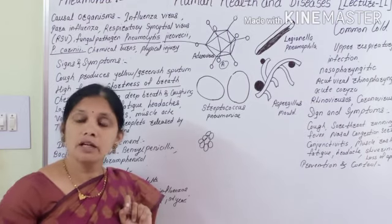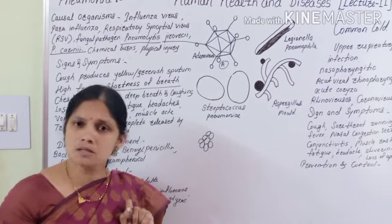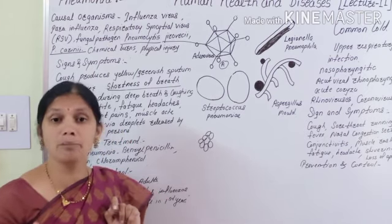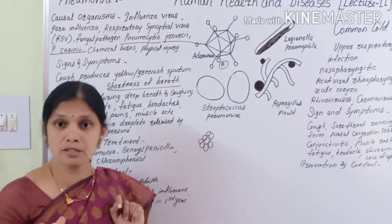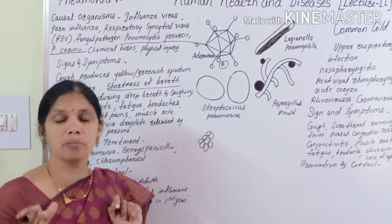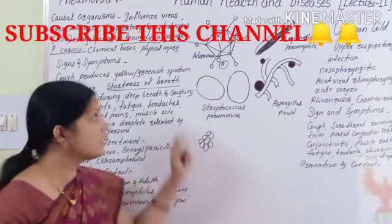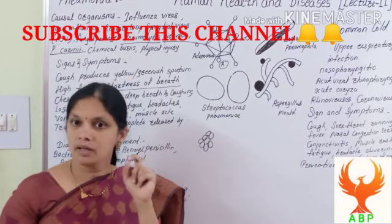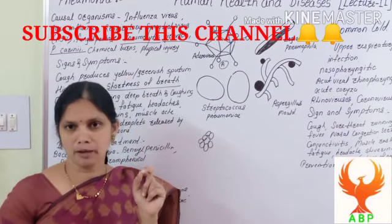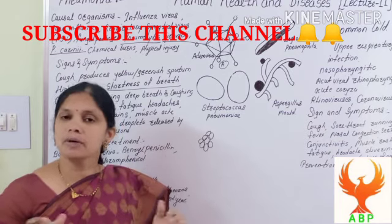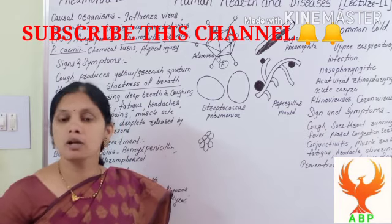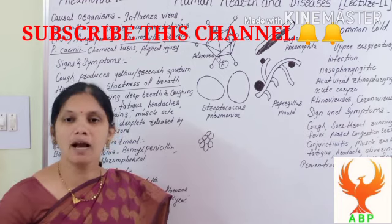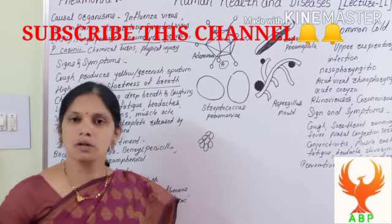The main symptoms of pneumonia are inflammation of the lungs, specifically inflammation of the air sacs, and a yellowish-greenish sputum in the air sacs. This is all about pneumonia and the common cold. Thank you very much.